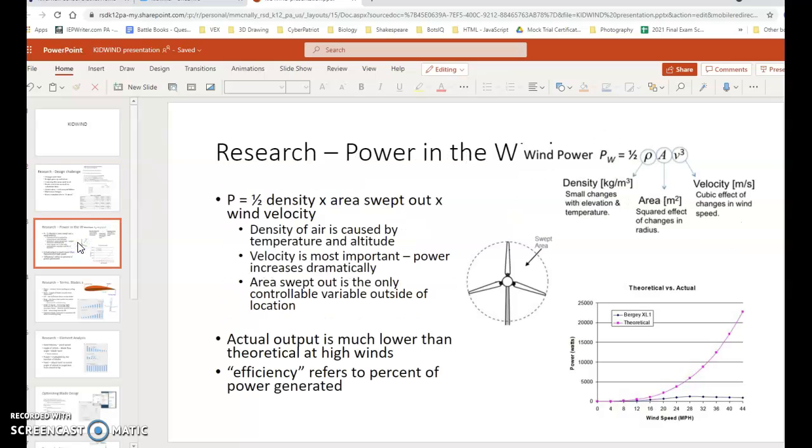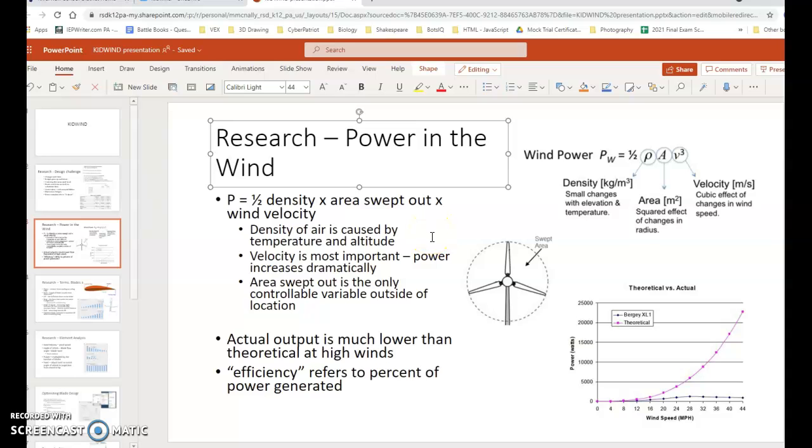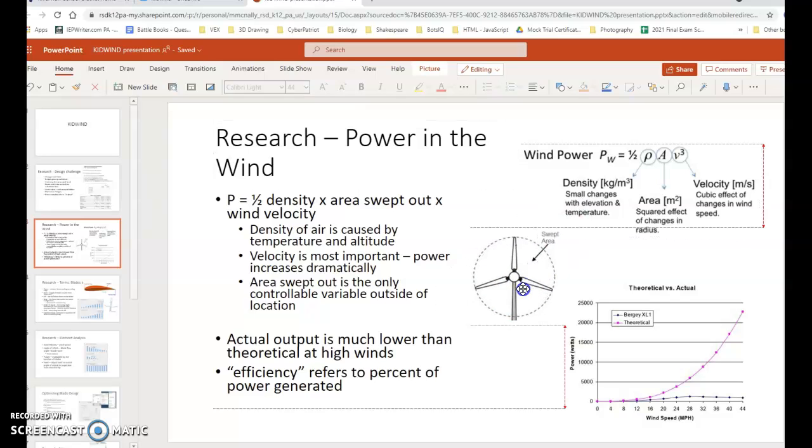Instead, one person talks about: So the bottom line with this whole power in the wind thing was that the main thing that you can control is how big the windmill is, this wind swept. The wind speed, that's going to be based on where you're at. The density of the air, like it changes when it's hotter or a higher altitude. Those things you really can't change when you build your windmill. This is it. What do you do with your wingspan? What do you do with the actual blades? I stop.